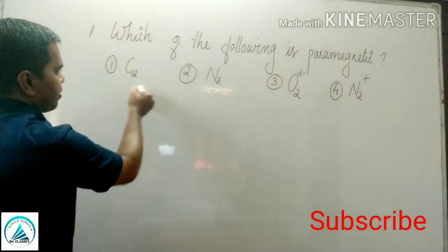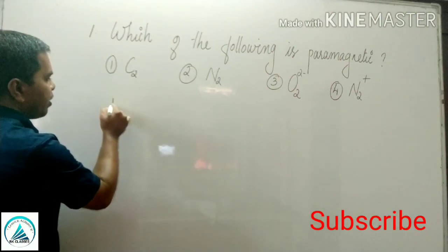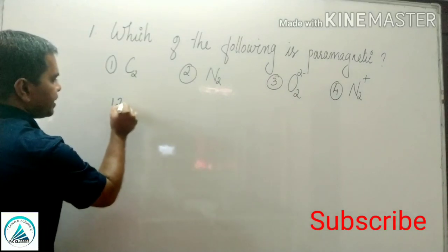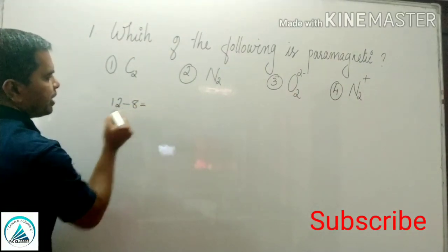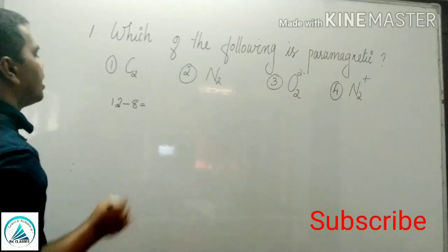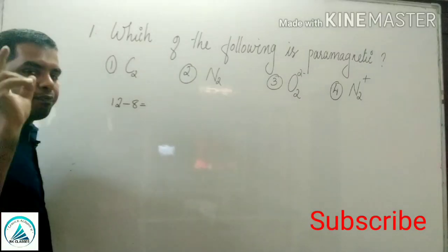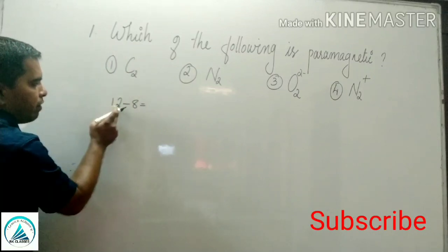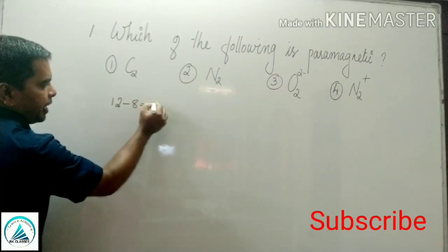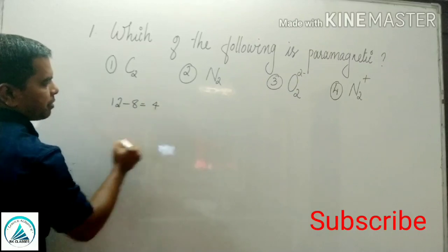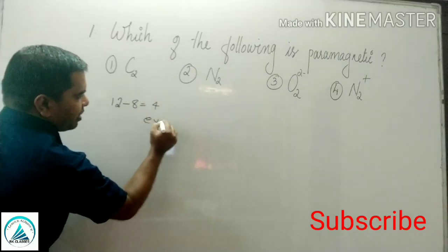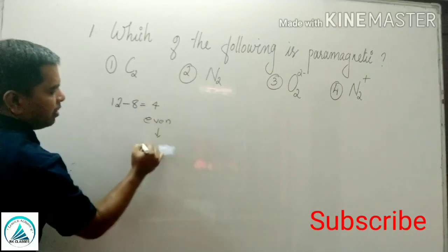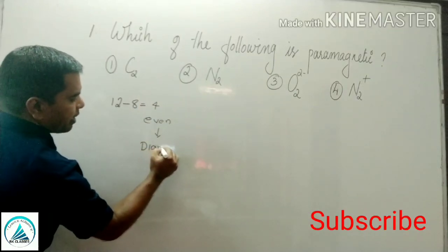First option is C2. Total number of electrons in C2 molecule is 12. Then subtract 8 electrons — it is a shortcut to predict magnetic behavior that we have already discussed in the first section. Total number of electrons: 12, subtract 8, remaining 4 electrons. Remember it is an even number. Since the remaining number is even, the molecule is diamagnetic.